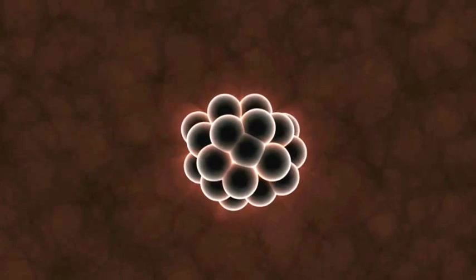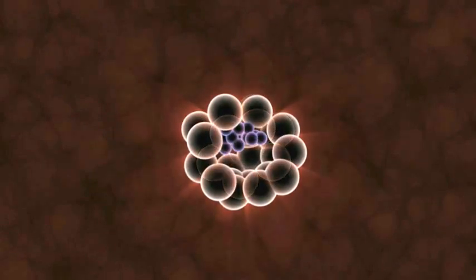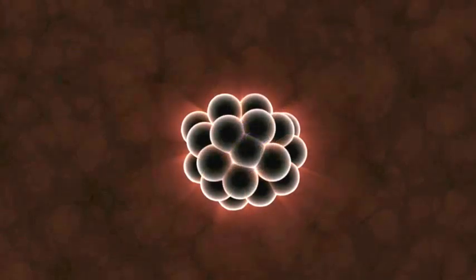Inside the blastocyst, we find the group of cells that will actually develop into a human being. The outer cells will give rise to the placenta and other supporting tissues.